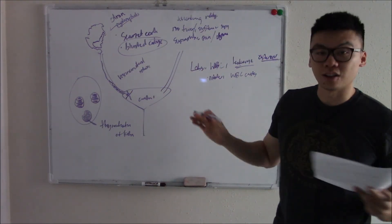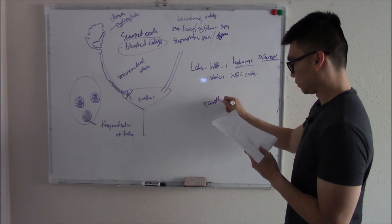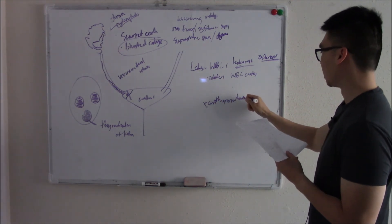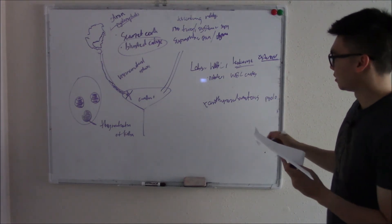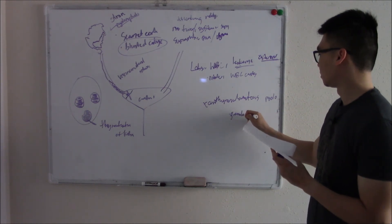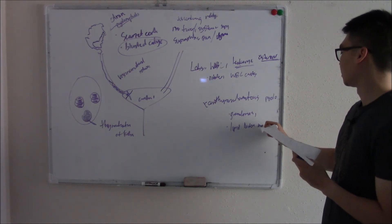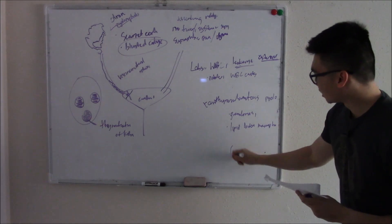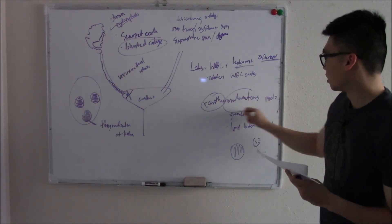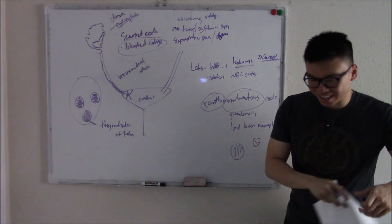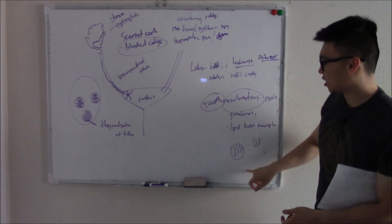There's this very special type of pyelonephritis called xanthogranulomatous pyelonephritis. This is pyelonephritis that contains granulomas and fat-laden macrophages. Because you have all these granulomas and macrophages that have fat in them, we call that xantho - that's the fat part - granulomatous pyelonephritis. So the name kind of gives it away.